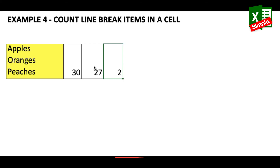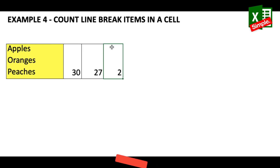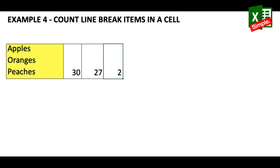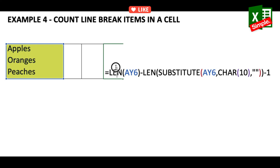Normally when writing a longer function I like to break it down into smaller ones first and then combine them. I'll copy the individual cell functions and paste them together into a single combined formula, then remove the helper cells. This gives me the complete function needed to count line breaks in a cell.